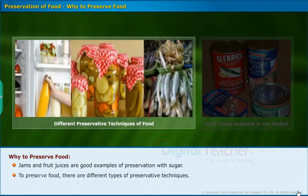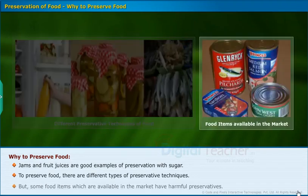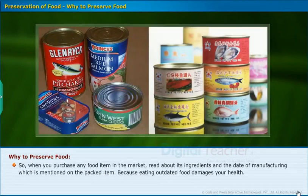To preserve food, there are different types of preservative techniques. But some food items available in the market have harmful preservatives. So when you purchase any food item in the market, read about its ingredients and the date of manufacturing mentioned on the packed item, because eating outdated food damages your health.